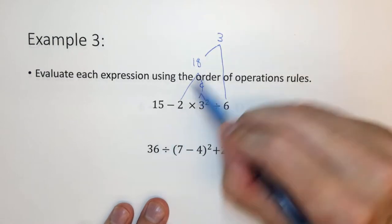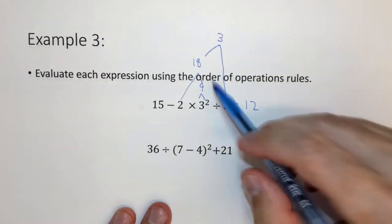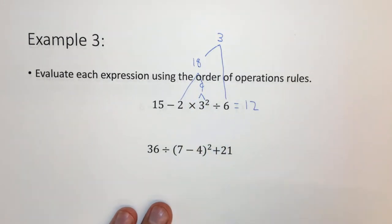Then finally, 15 minus 3, which equals 12. So that's kind of the order we did it in. That's where I'm showing the arrows like this.